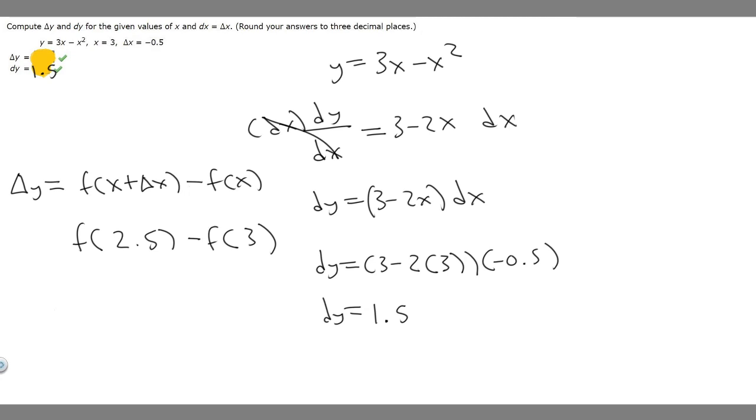Let's go ahead and find f of 2.5 first. So it's going to become y equals 3 times 2.5 minus 2.5 squared. So plug this in your calculator. 3 times 2.5 is 7.5, then we minus 2.5 squared, which is 1.25.